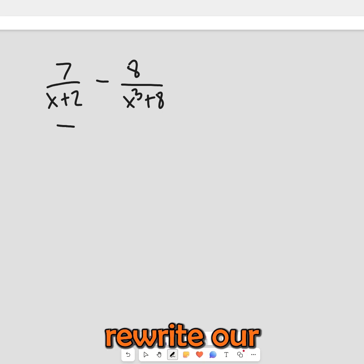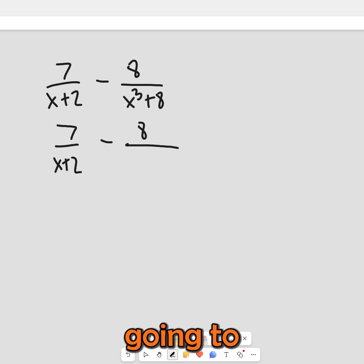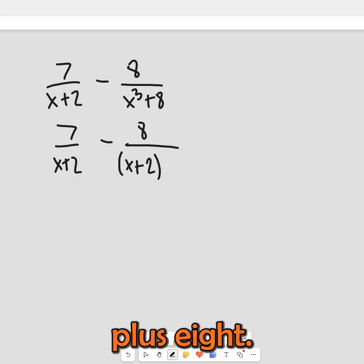So let's rewrite our 7 over x plus 2. And to factor this denominator we're going to write this as a plus b, same sign as x cubed plus 8. And we'll have a squared.